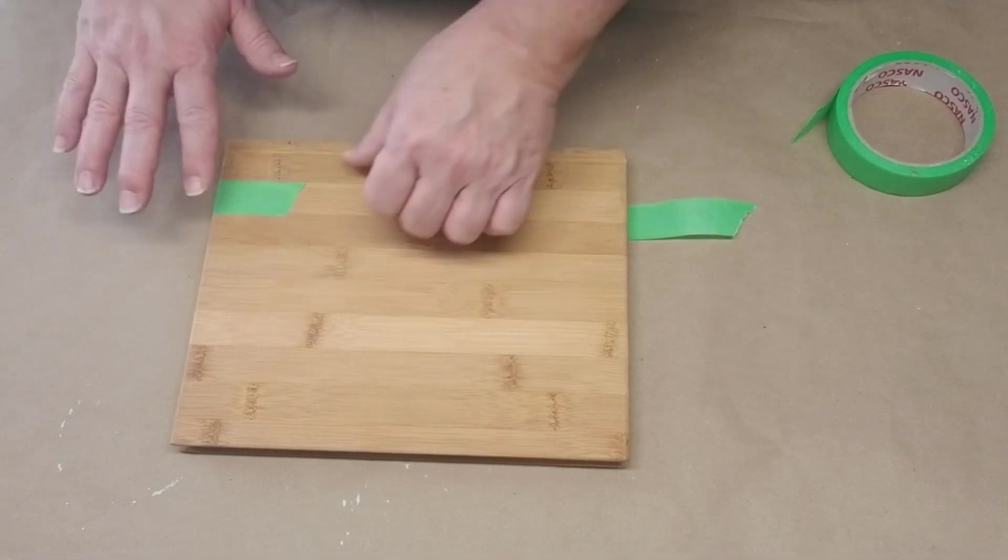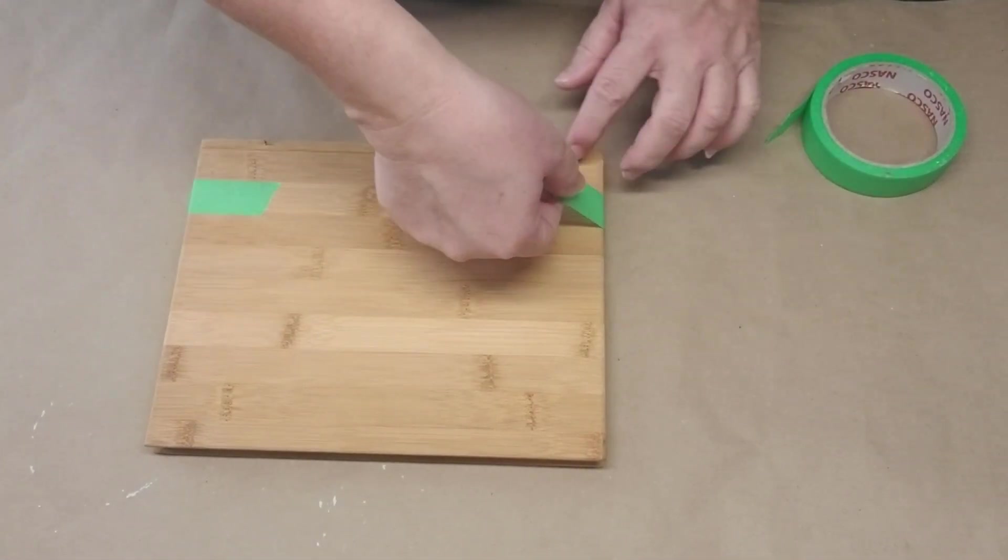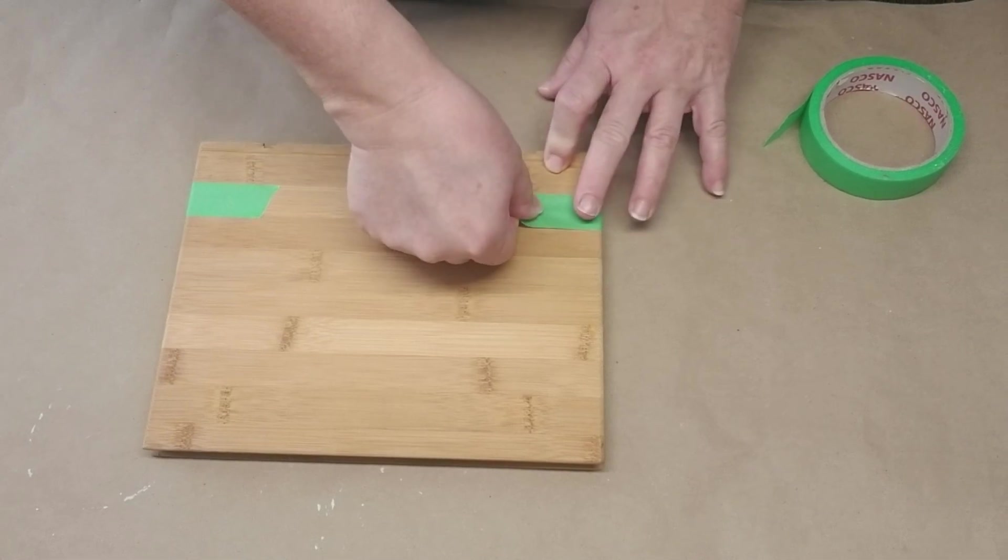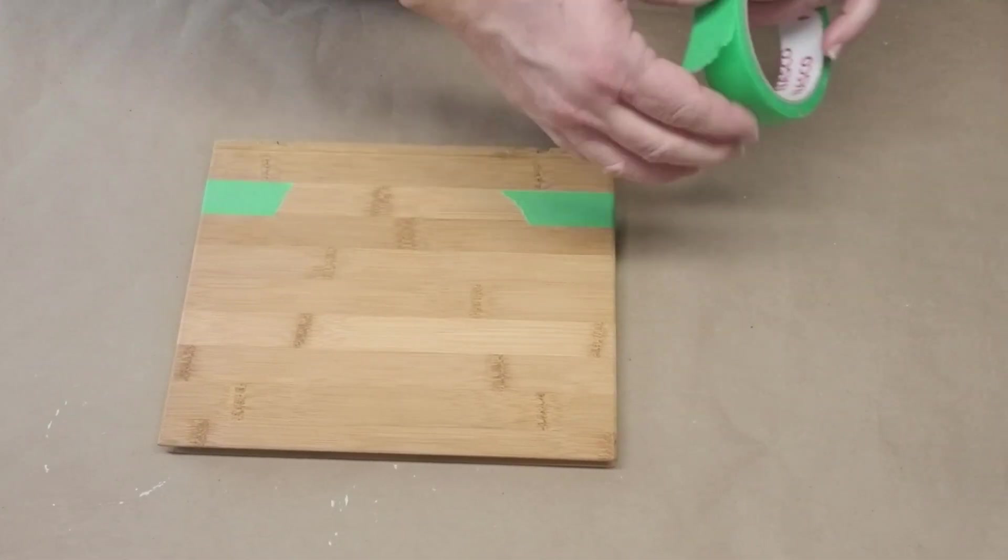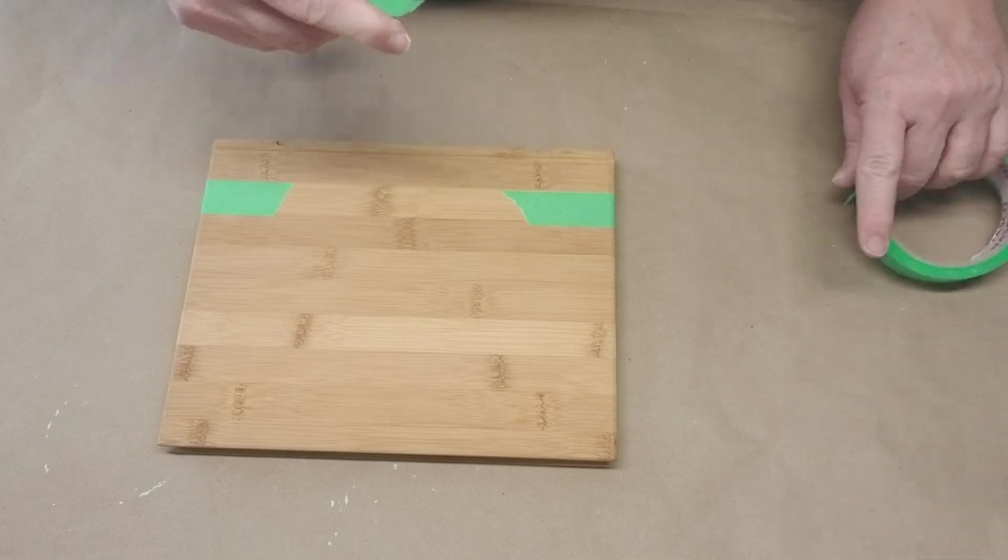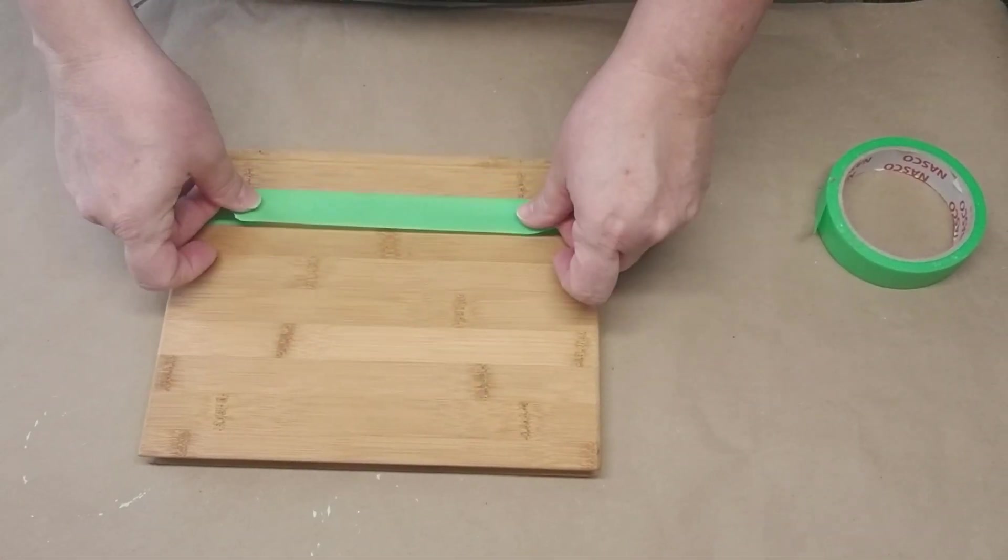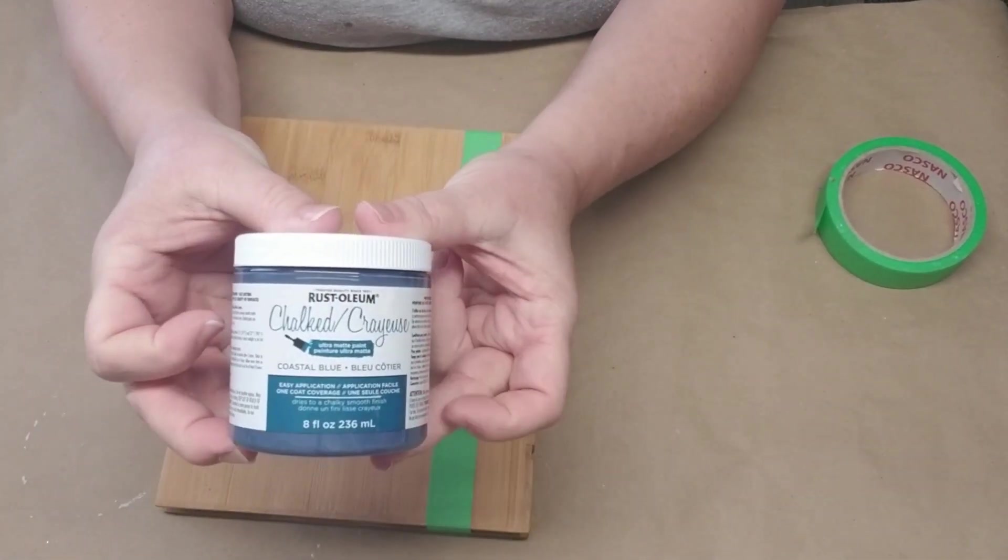I'm going to make it over to look a little bit like a vintage book. The first thing I'm doing is just putting on some painter's tape because I want to separate the two colors that I'm going to be painting this.